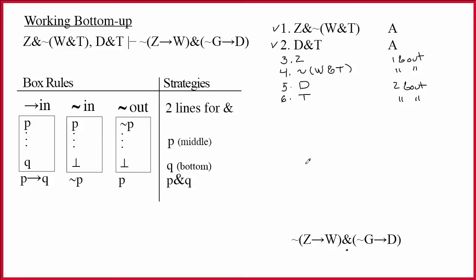We know what that means. In the middle of the proof, we are going to put P, tilde Z arrow W. At the bottom of the proof, we are going to write tilde G arrow D. What we're doing is breaking this up into two separate proofs. We've got space to do a proof for tilde Z arrow W, and then we've got space to do a proof for tilde G arrow D.